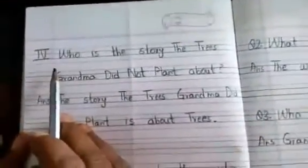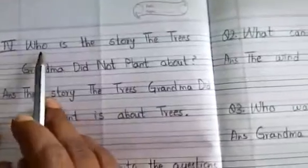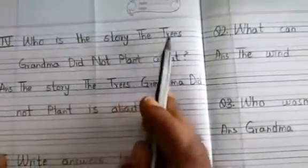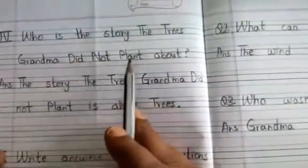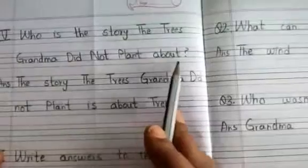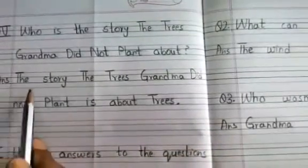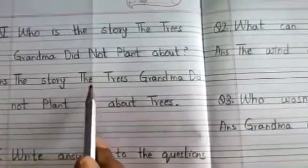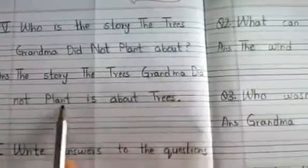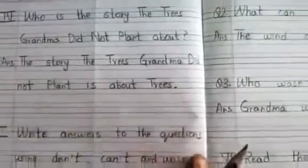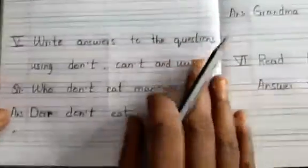Now turn the page. Here one question is there, children — fourth bit: 'Who is the story the trees grandma did not plant about?' So who is the story about, children? Answer: 'The story the trees grandma did not plant is about trees.' Like this you have to write the answer.